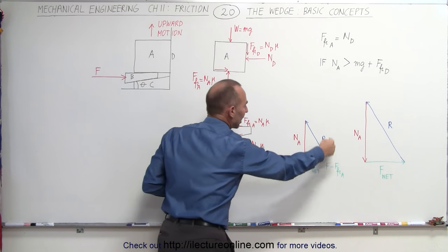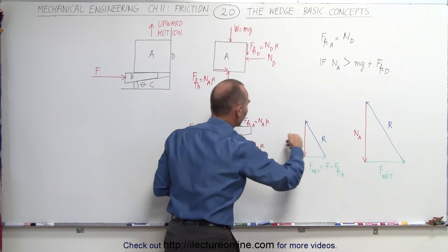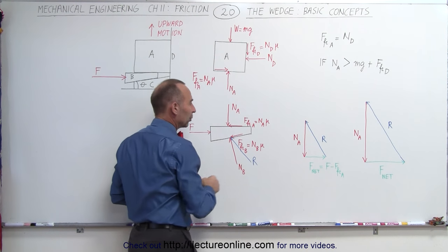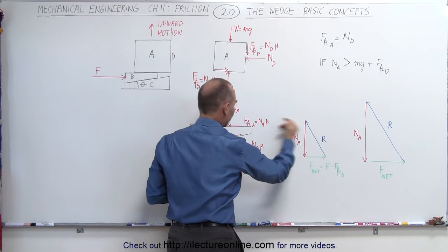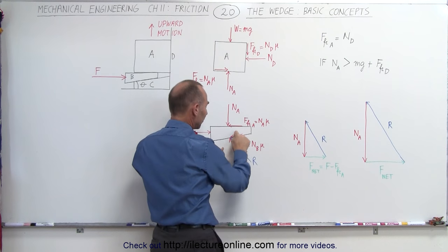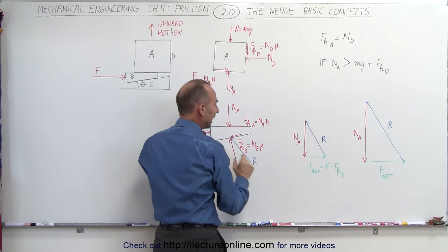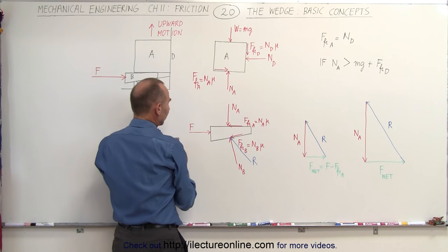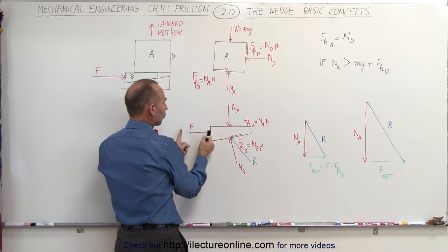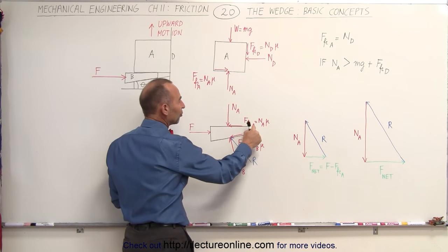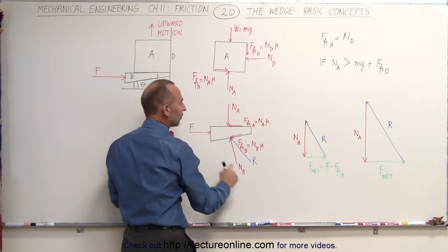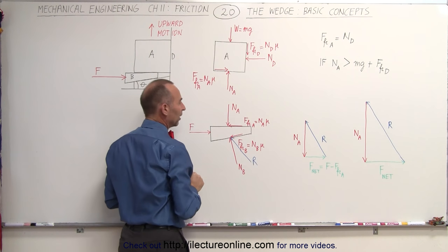Eventually, what we can now do is draw a diagram here of the forces acting on the wedge. We have the normal force acting downward, we have the resultant force at the bottom surface, which is the sum of these two forces right here, and then we have the net force driving the wedge in. The net force will be equal to the force here that's pushing against the wedge minus the friction force there, which is pushing back. So the net result of that is the net force driving the wedge in.